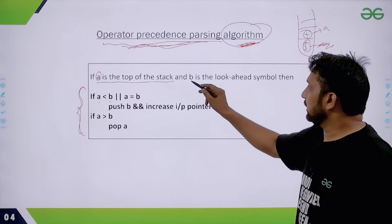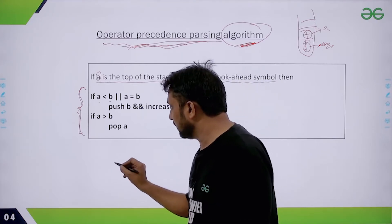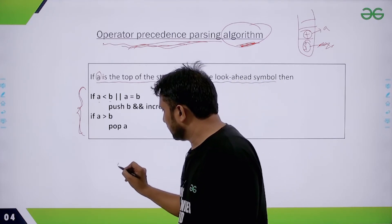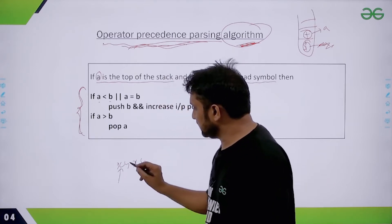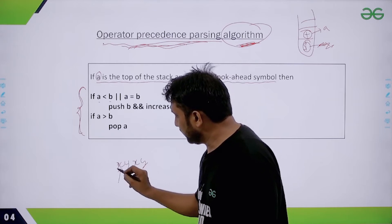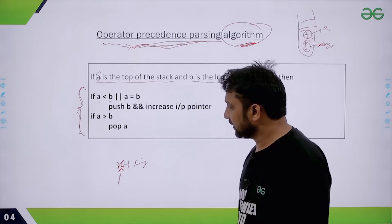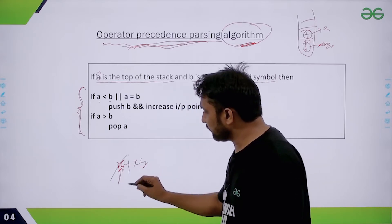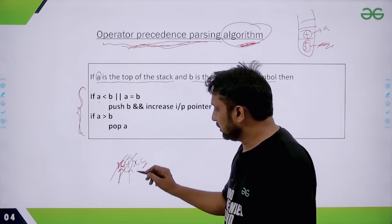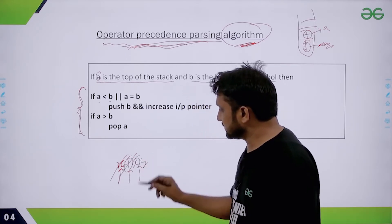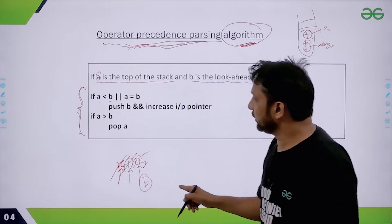B is the lookahead symbol. You have some input string — for example, x, y, x, y. In the beginning, we look at the first symbol, so that will be our lookahead symbol. Once we process that, we look for the next symbol. Whatever is currently being looked at in the input is represented by variable B, the lookahead symbol.